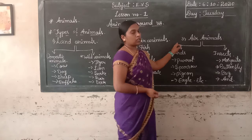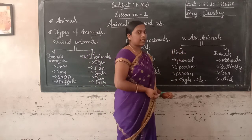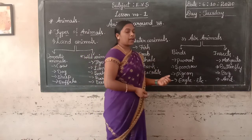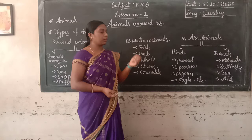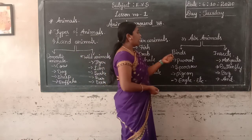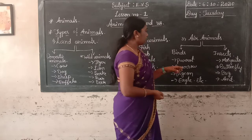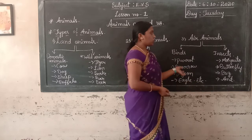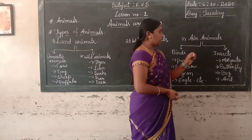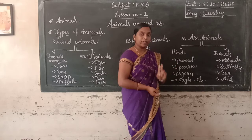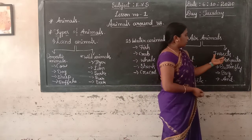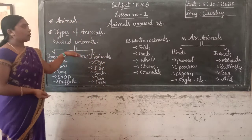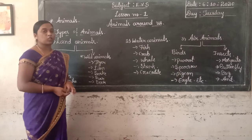Air animals are divided into two groups: birds and insects. Birds are beautiful and fly using two wings. Birds also have two legs. Examples: parrot, eagle, etc. Insects are small creatures with six legs and commonly have two pairs of wings. Examples of insects: mosquito, butterfly, and ant. Today's topic was animals and types of animals — I hope you understood this topic. Thank you.